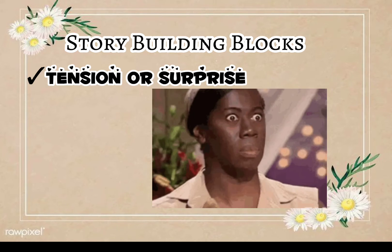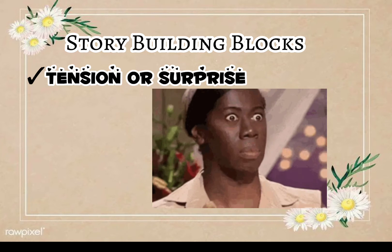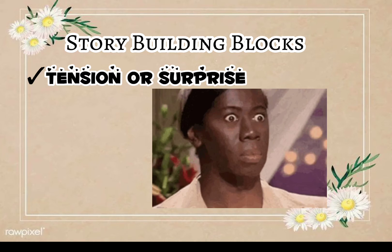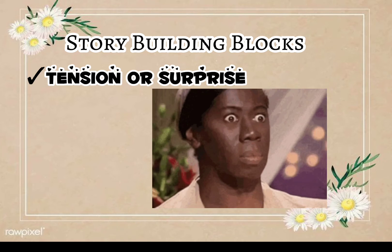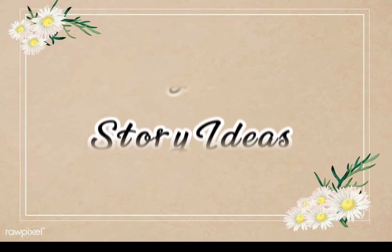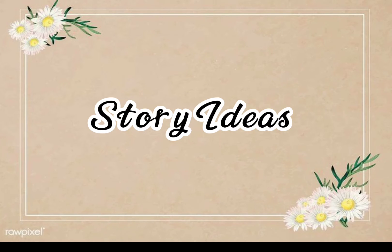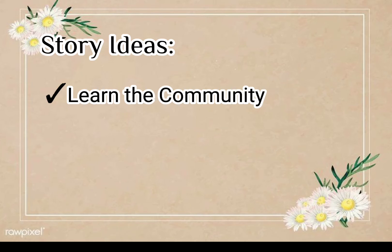Tension may come from a conflict between characters or between a character and an opposing force. Reporters should look for turning points and moments that illustrate the central theme of a story, and surprises that come up along the way. Moving to story ideas, the first is to learn the community — look at government data on local demographics and economy, like knowing the current governance and how people live.